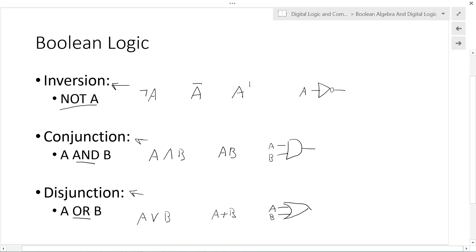So inversion, conjunction, and disjunction — the NOT, the AND, and the OR — can all be used to build digital logic.